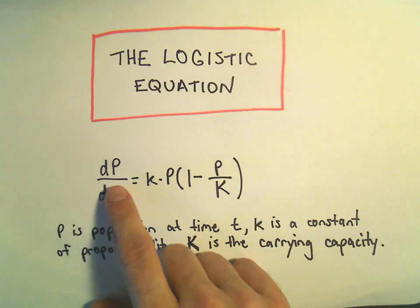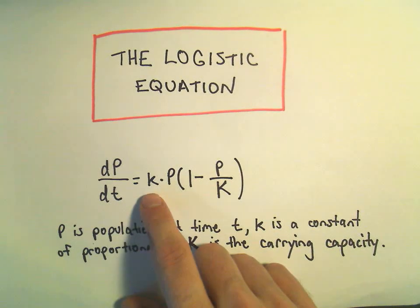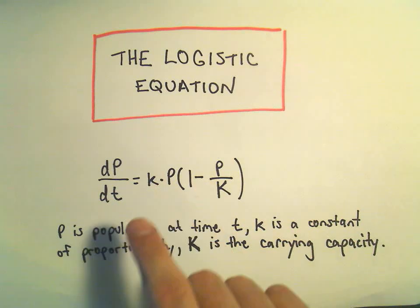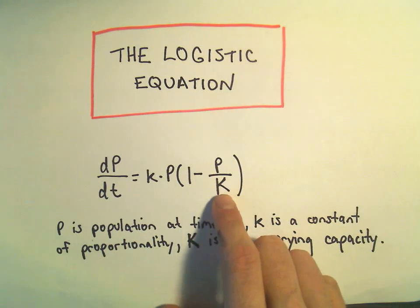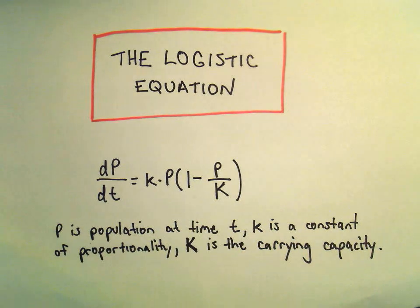So the change in population with respect to time equals little k, which is a constant of proportionality, times p, which is the population at some time t. And then we take 1 minus p over capital K, where K is the carrying capacity.